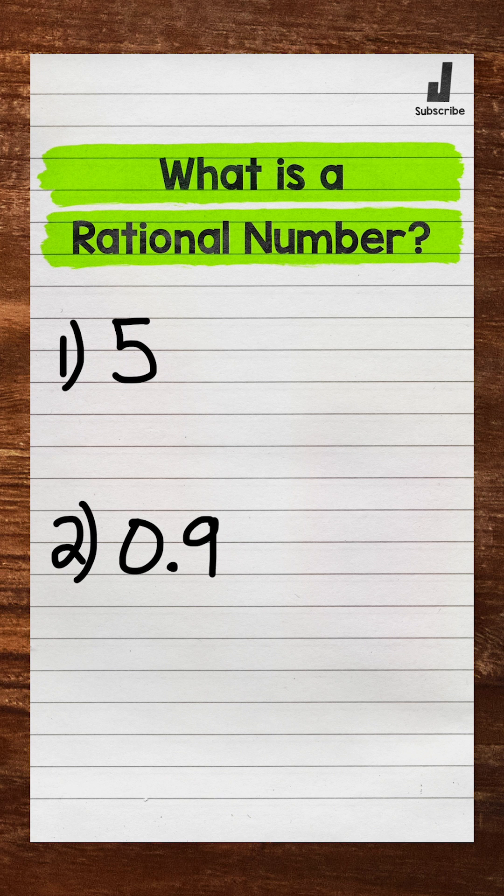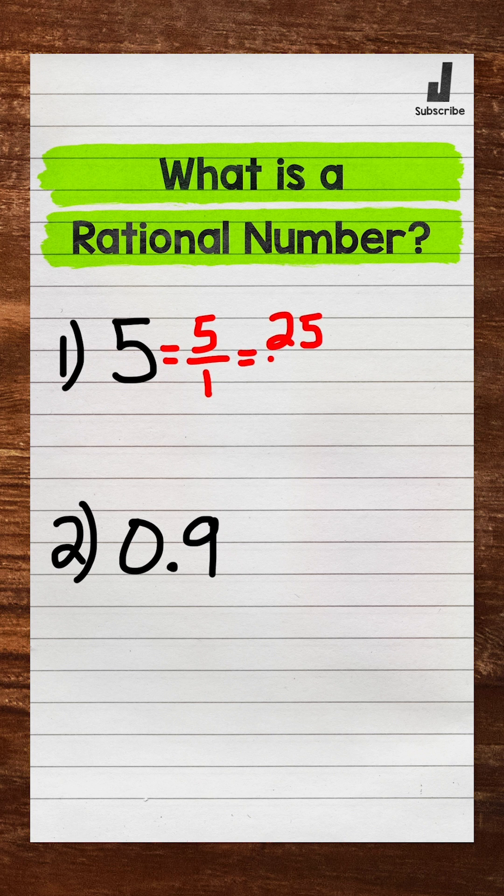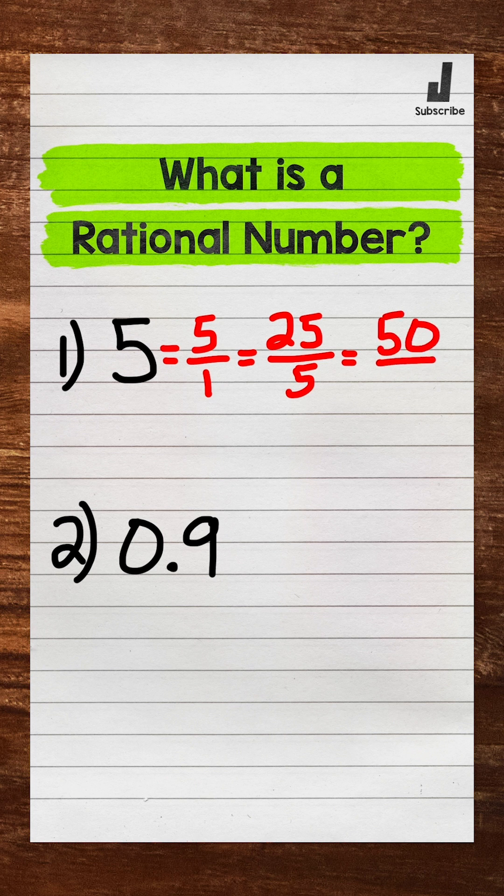For example, let's jump into number one where we have five. Can we write this as a fraction of two integers? Yes, for example, five over one, or 25 over five, or 50 over 10. All of those are examples of fractions of two integers that equal five, so five is a rational number.